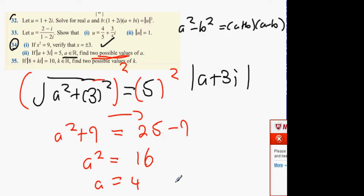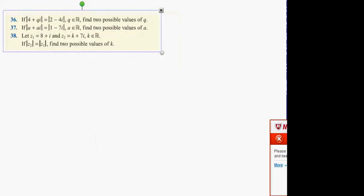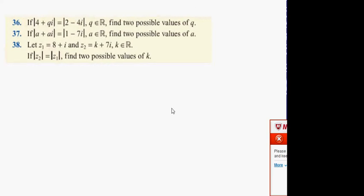Now read the question. Two possible values: minus 4, plus 4. Okay, now these are the last type of ones. And once again, they're actually quite easy. What says next is for 37, it says if modulus of a plus ai is equal to modulus of 1 minus 7i, find two possible values of a.